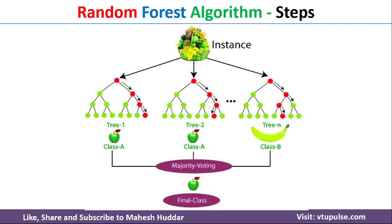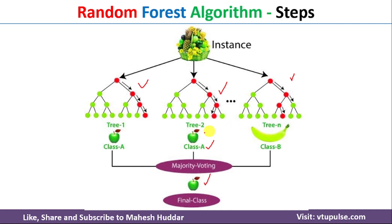Let's look at an example. Suppose we want to classify fruits. We have 100 fruits and divide them into three sets of 30. We build three decision trees. A new example is given to all three: the first tree classifies it as apple, the second as apple, and the third as banana. Since it's a classification problem, we apply majority voting — apple appears twice and banana once, so the new example is classified as apple.